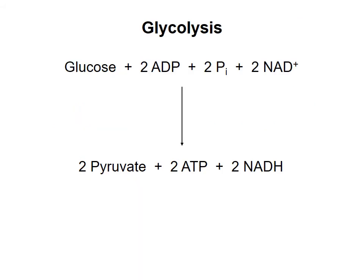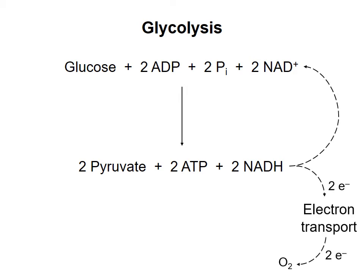For glycolysis to continue, you need a supply of the starting materials. In particular, you need a way to regenerate NAD+ from NADH. If oxygen is present, this is not a problem — our cells have electron transport pathways that remove electrons from NADH and transfer them to other molecules, with molecular oxygen being the ultimate electron acceptor. During this process, NADH is converted back to its oxidized NAD+ form. But if oxygen is not present, eventually all the NAD+ in the cell would be converted to NADH, meaning the cell would not be able to use glucose to make ATP.